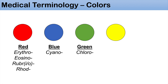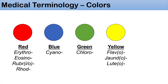The next color we're going to talk about is yellow. The prefixes that stand for yellow include several options. One of them is flav or flavo. Another one is jaund or jaundo, which comes from the French word jaune — you can think of the word jaundiced. Another one is lute or luteo; you can think of corpus luteum, meaning yellow body. The next one is xantho, and another one is cirrhose — you can think of cirrhosis, all in the context of jaundiced.